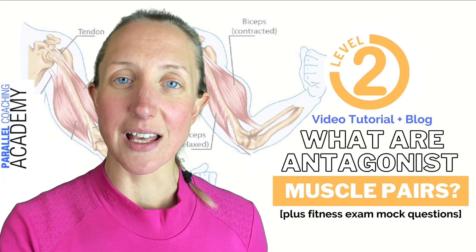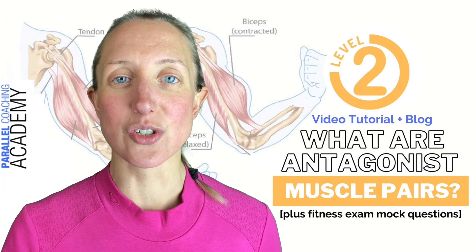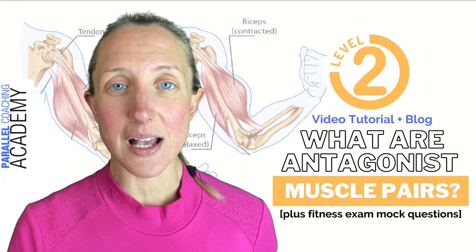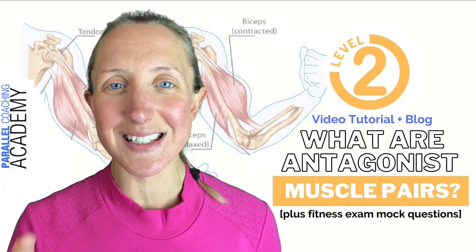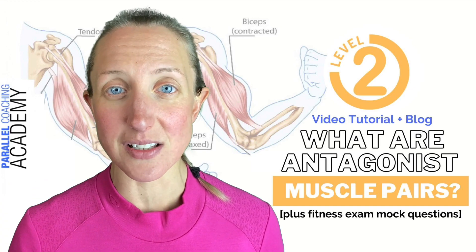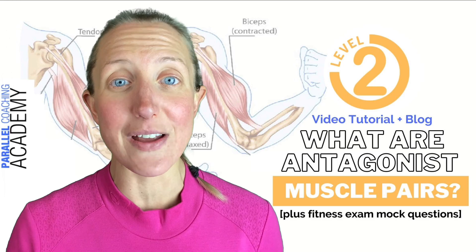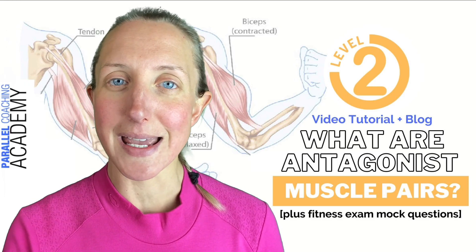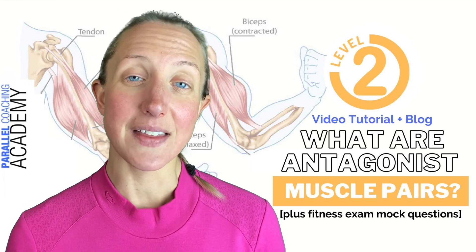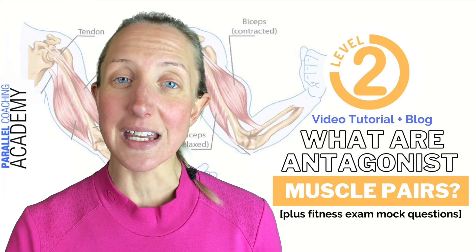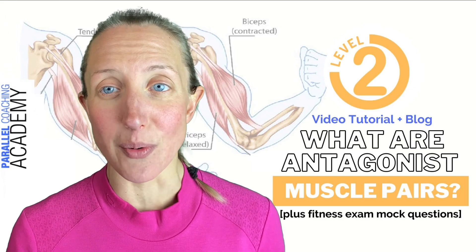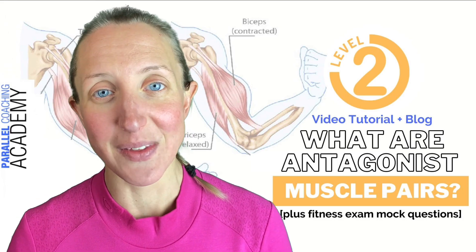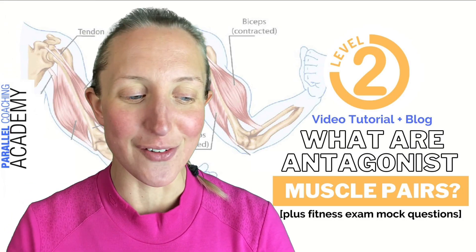One muscle is contracting, the other muscle is relaxing, and this always happens within these set pairings. It can't move away from those set pairings — each muscle in our body works with a pairing and they're paired for life.